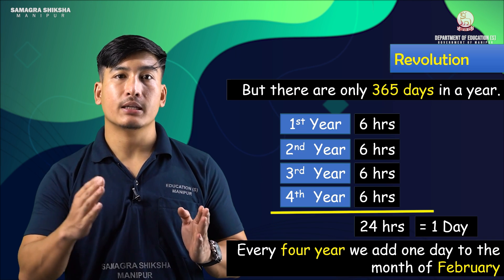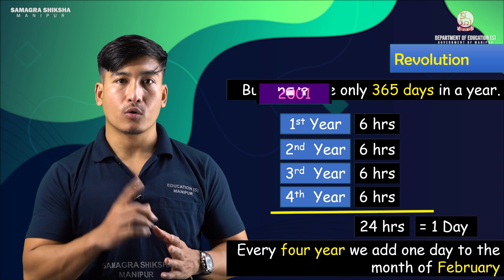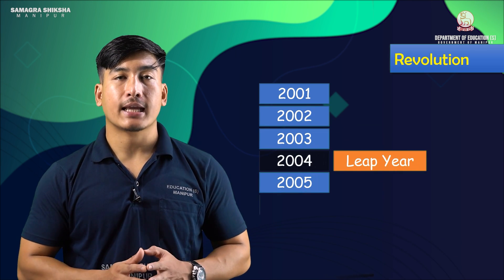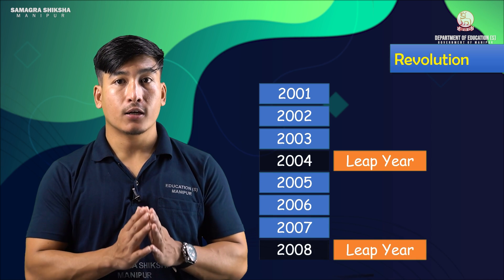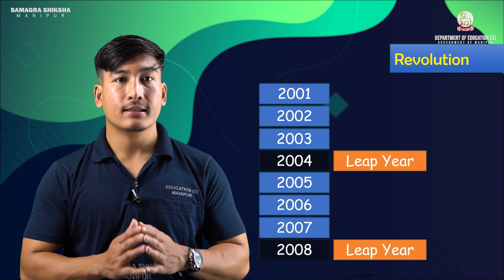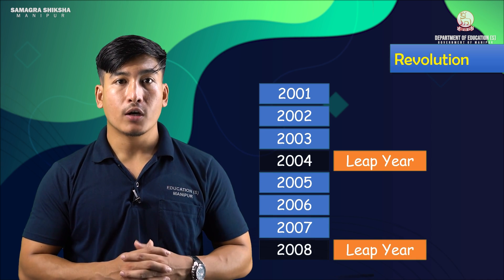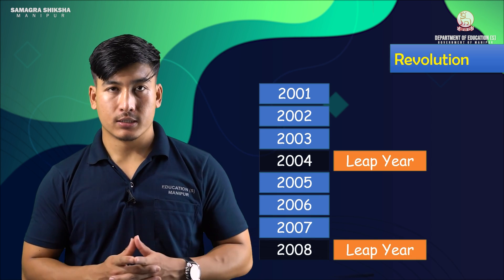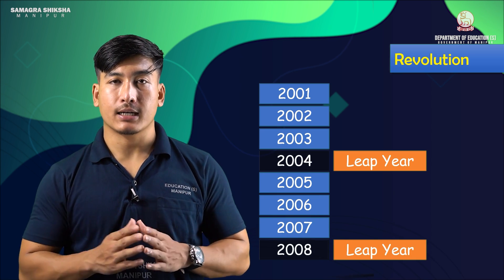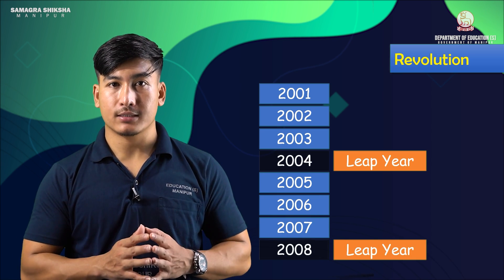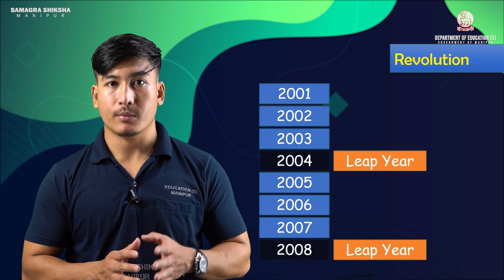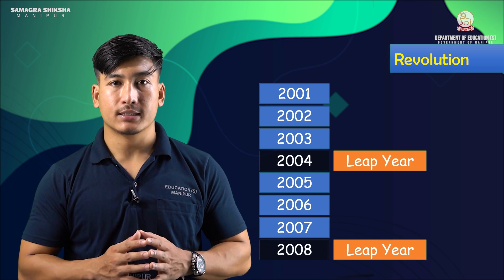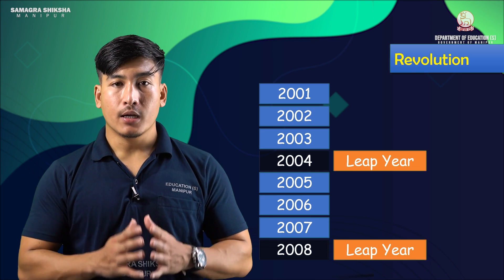So every four years we add one day to the month of February. You will see in the calendar that the month of February has 29 days instead of 28 days once in every four years. This year is called a leap year.